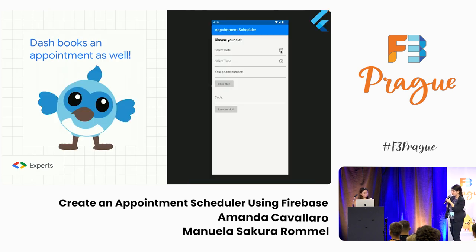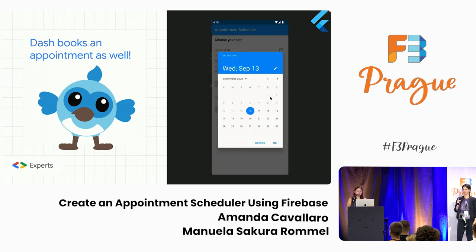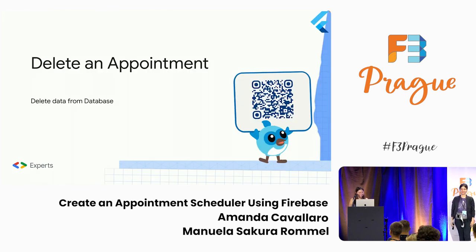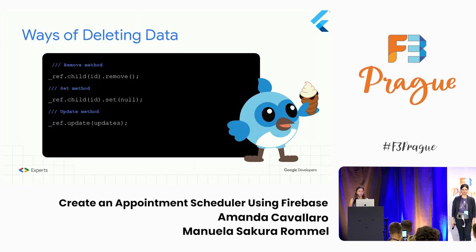There's another user as well — Dash books her appointment too. And now we're going to go over how to delete an appointment, because Dash can't keep her appointment with Puff.